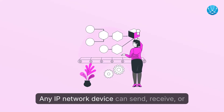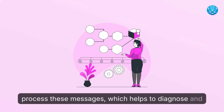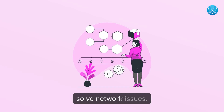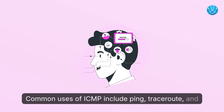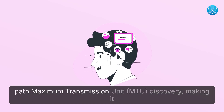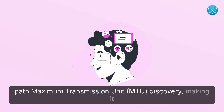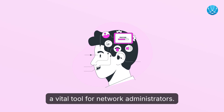ICMP messages are encapsulated within IP packets. Any IP network device can send, receive, or process these messages, which helps to diagnose and solve network issues. Common uses of ICMP include ping, traceroute, and path maximum transmission unit discovery, making it a vital tool for network administrators.